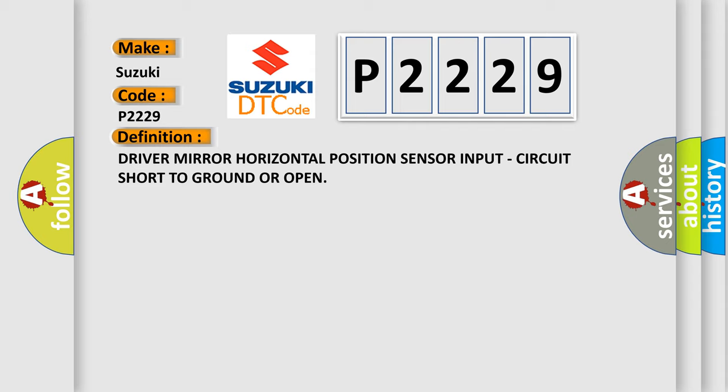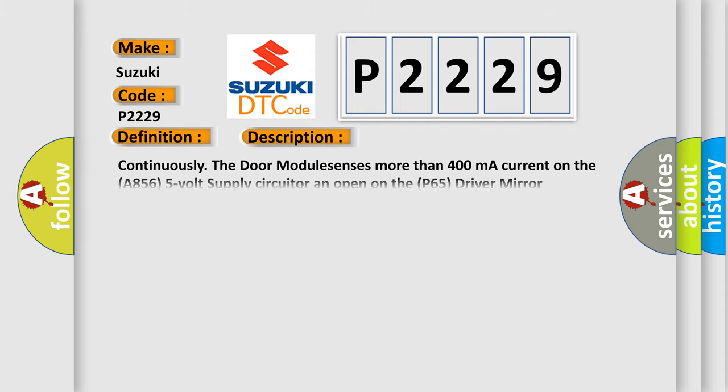And now this is a short description of this DTC code. Continuously, the door module senses more than 400 mA current on the A856 5-volt supply circuit, or an open on the P65 driver mirror horizontal position signal circuit for more than two seconds.